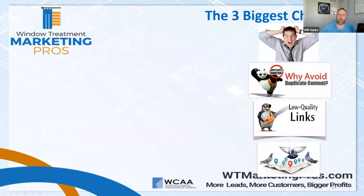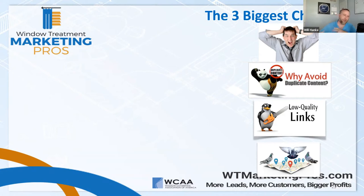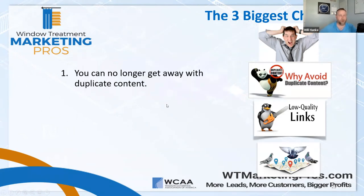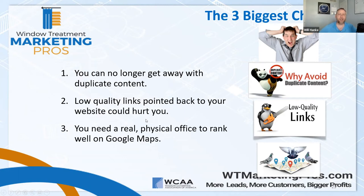Let's talk about the three biggest changes, related to three major Google updates. They come out with updates every day, but when they have a major update, the search community tends to name them. In this case we're talking about the Panda update, the Penguin update, and the Pigeon update — all starting with P, not on purpose. These are related to: duplicate content, low-quality links, and needing a real physical office to rank in Google Maps.